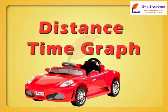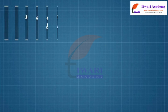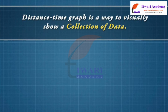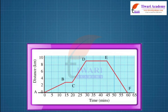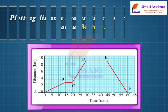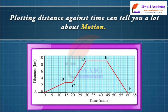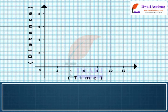Distance-time graph. Dear students, a distance-time graph is a way to visually show a collection of data. It allows us to understand the relationships between distance and time. Plotting distance against time can tell you a lot about motion.